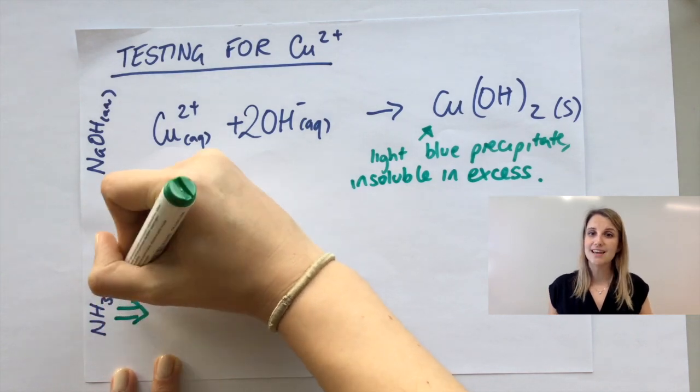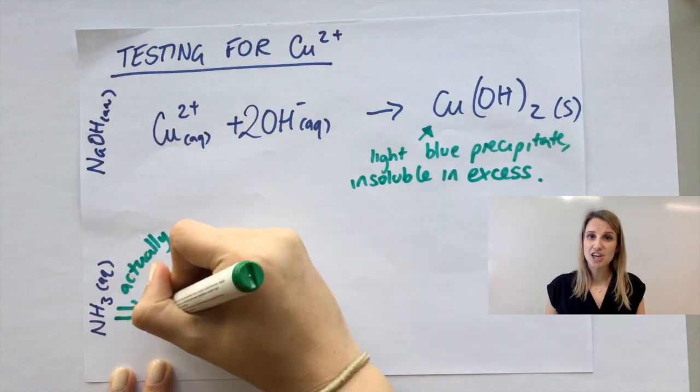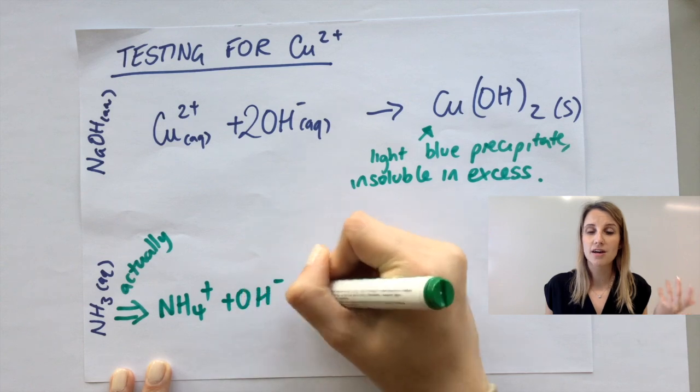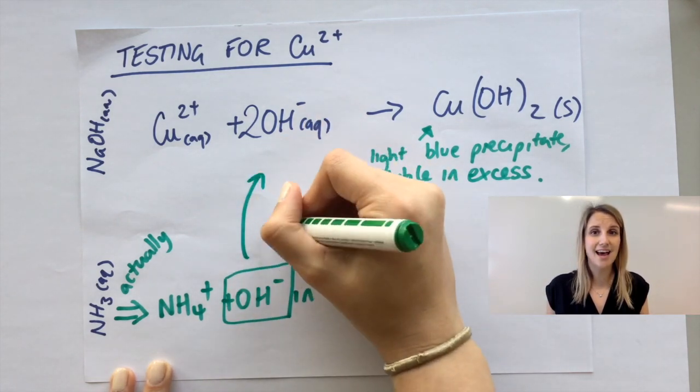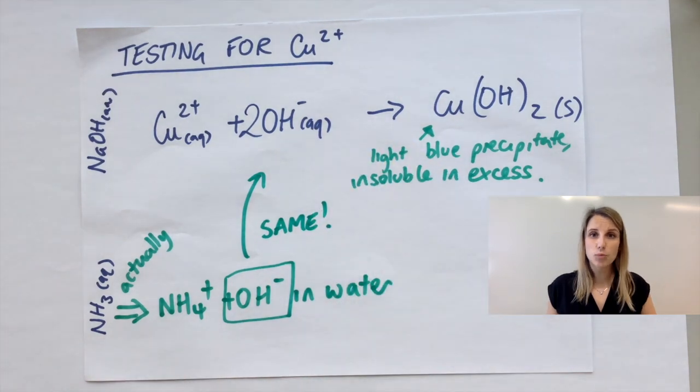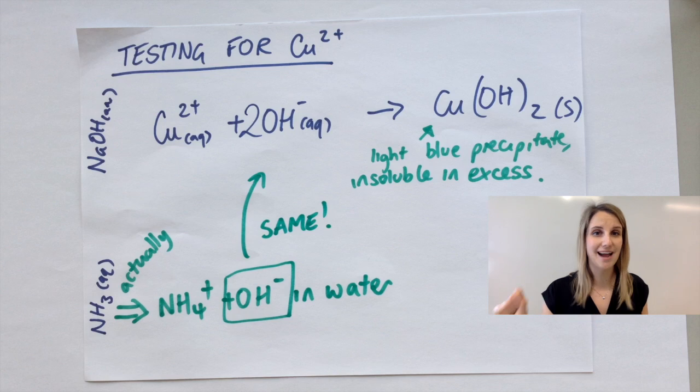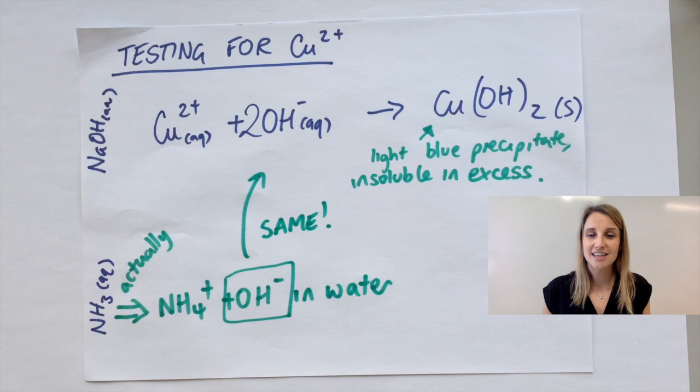Now the ammonia was a little bit different, but actually every time you think of ammonia, when ammonia dissolves in water it makes NH4 plus and OH minus. So what that means is the OH minus is still the thing reacting with the copper. So you still have the same reaction going on to give you that light blue precipitate.